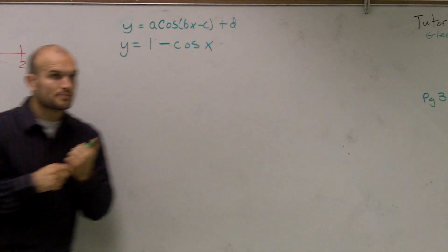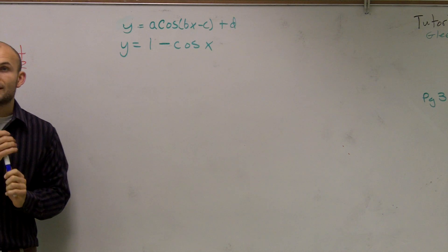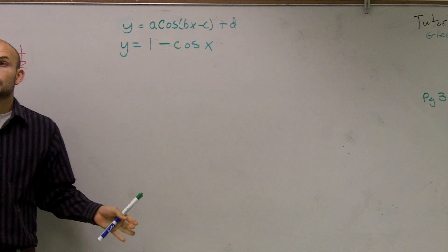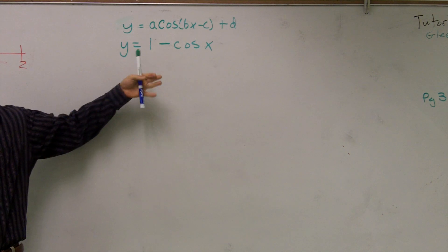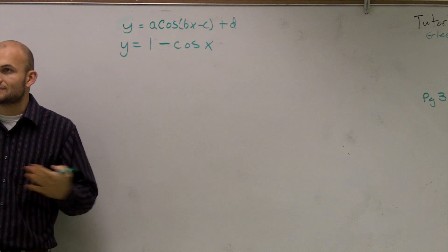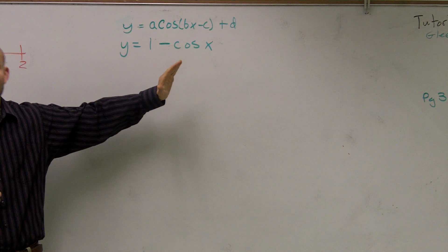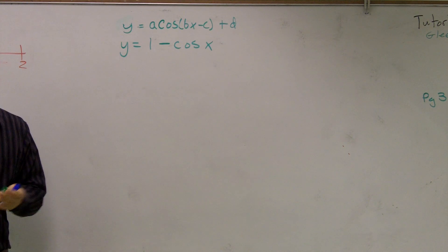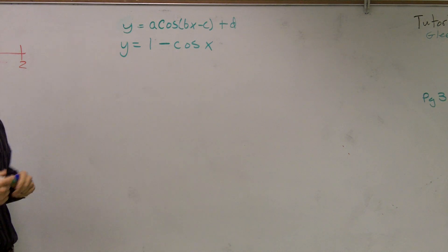All right. So what I'd like to do, guys, is show you how to graph this function that says y minus cosine of x. Now, like I said, on your homework it has y plus cosine of x, but I need a problem that's going to bring in reflection. So you'll still be able to see exactly what your homework question is by me doing it first.